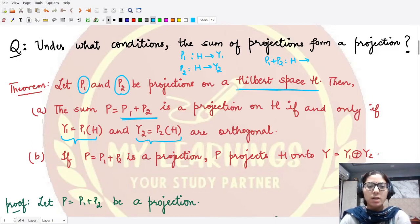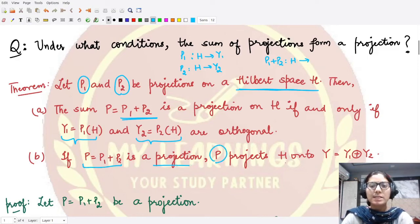So here P, which is the sum, is a projection where this P projects H onto the direct sum of Y1 with Y2. So this P projects H onto the direct sum of Y1 with Y2.